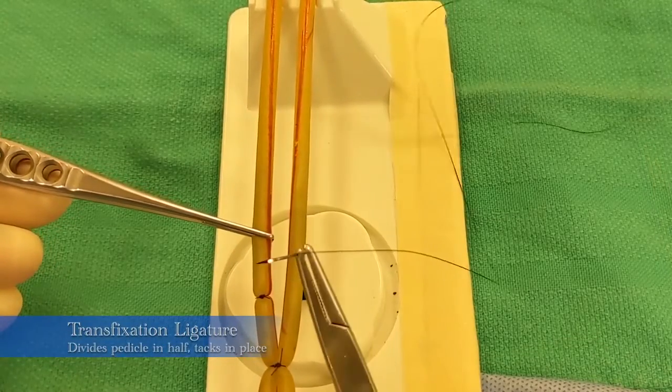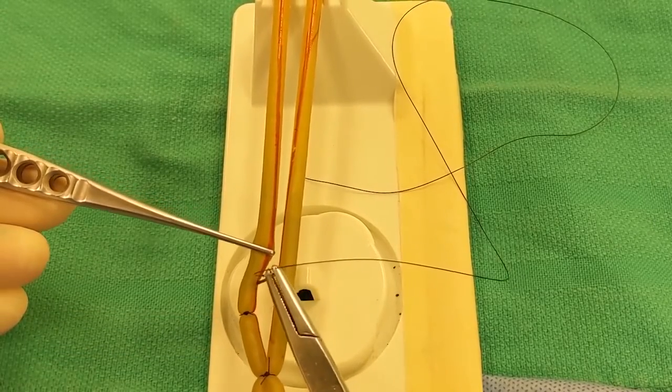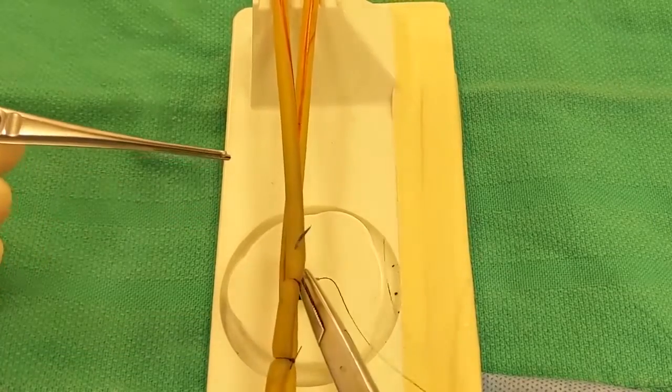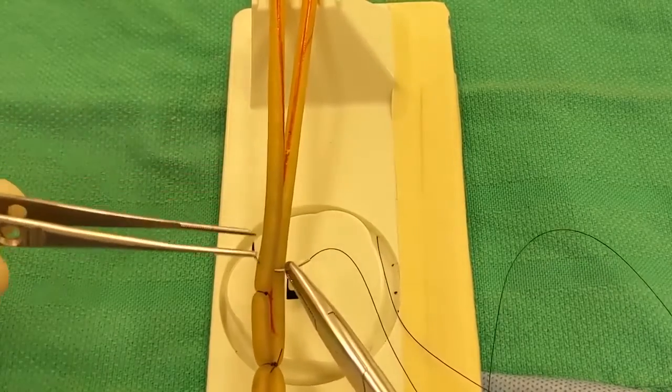Next would be a transfixation ligature. This might be for a larger vessel or maybe a larger pedicle. You actually use the needle to split the vessel or the pedicle in half so that it's divided into two smaller bundles of tissue, which can be ligated separately.